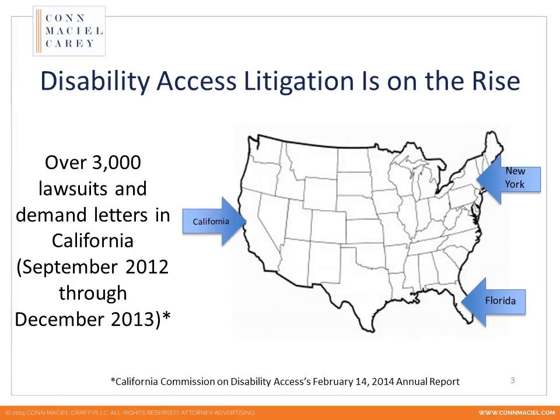The reason that Andrew and I focus so much of our practice on this is because disability access litigation continues to increase dramatically. Last year there was a huge surge in Title III lawsuits by more than 63% nationally, with a total of 4,400 federal lawsuits. California is the largest, with over 3,000 lawsuits and demand letters filed between September 2012 and December 2013. Florida is close in second with 2,000 cases, and New York is also very active. We litigate these cases all around the country under federal law as well as state law access codes.